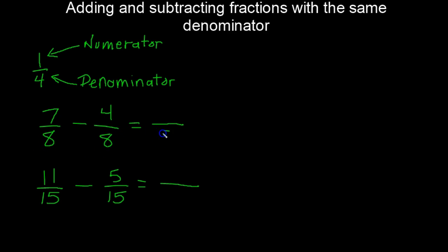The denominators are always going to be the same, so we're just working with the numerators. It's seven subtract four, which gives us three eighths. We can't reduce that because there isn't anything that divides evenly into three and eight, so this is already in simplest terms.